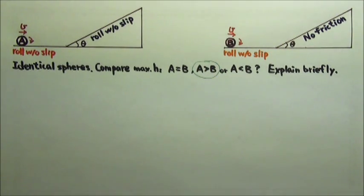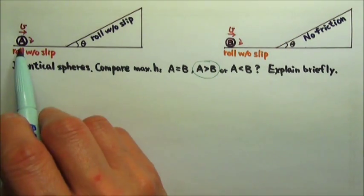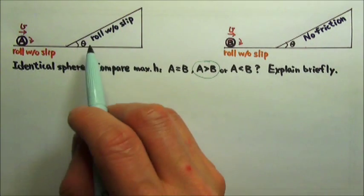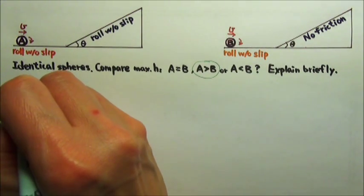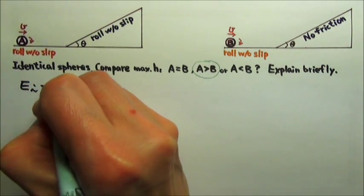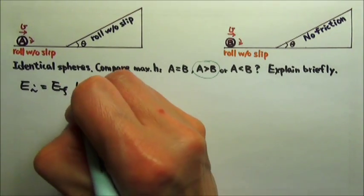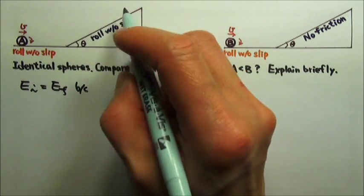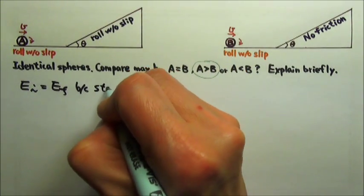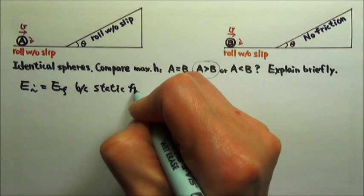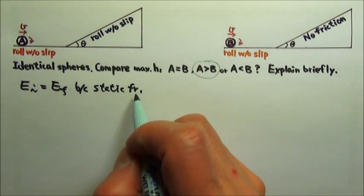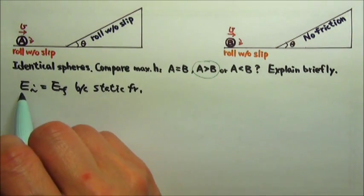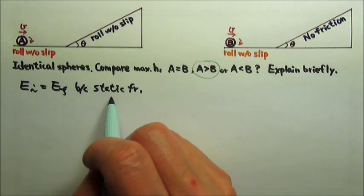Sphere A goes higher than sphere B. Sphere A rolls up the incline without slipping, so we can have conservation of mechanical energy. Because there's friction when sphere A goes up the incline, but that's static friction. And this static friction does not do any work. It does not take any mechanical energy away to turn it into heat.